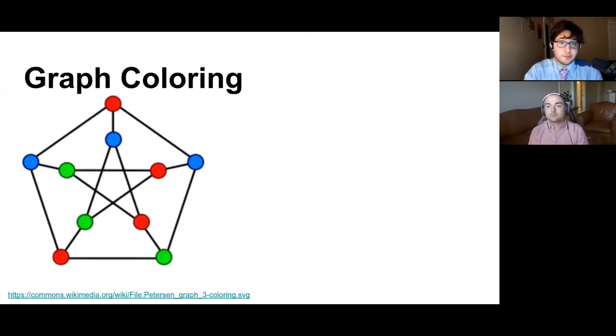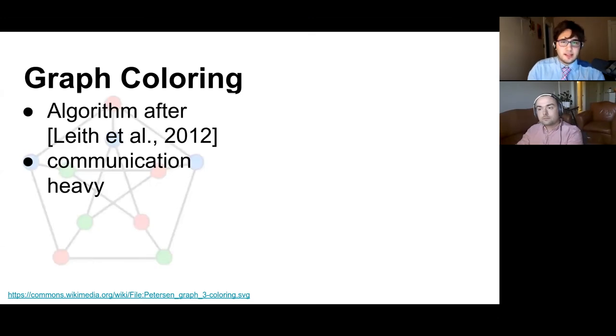The first one is a graph coloring problem. In this problem, each node has to communicate with its neighbors and choose a color that's not already assigned to them. This algorithm is based after the work by Leith et al. in 2012 and it's a very communication heavy problem because each of the nodes has to communicate on every update to check what the neighbors colors are. There's not really much computation needed.